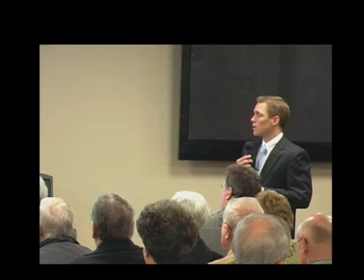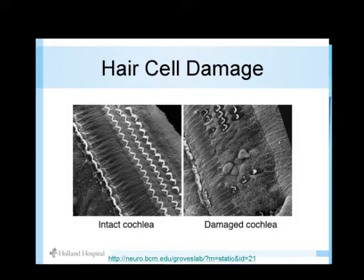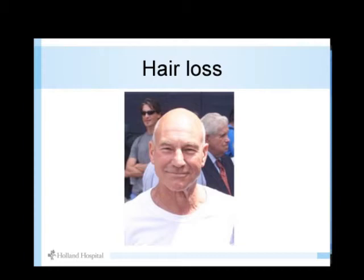Looking at an animal with normal hair cells, you'll see these rows — the white-looking things are the hair cells. If they undergo some damage to the cochlea, it starts to look like there are very few hair cells left. Hair cell loss is influenced by a lot of things — age is one of them, genetics is another — and the same is true for hair cell loss.